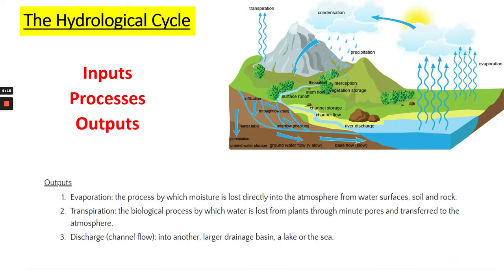The final section is outputs, and the outputs of the hydrological cycle include three things. First is evaporation — the process where moisture is lost directly into the atmosphere from the water surface, from soil, rock, trees and plants. We then have transpiration, the biological part of this process where water is lost from the plants and the pores on the leaves going into the atmosphere. And finally we have discharge or channel flow, where water is moved from one channel into a larger drainage basin, a lake or the sea. Hopefully that clears up the basics of the hydrological cycle, which are very important for understanding the rest of this topic.